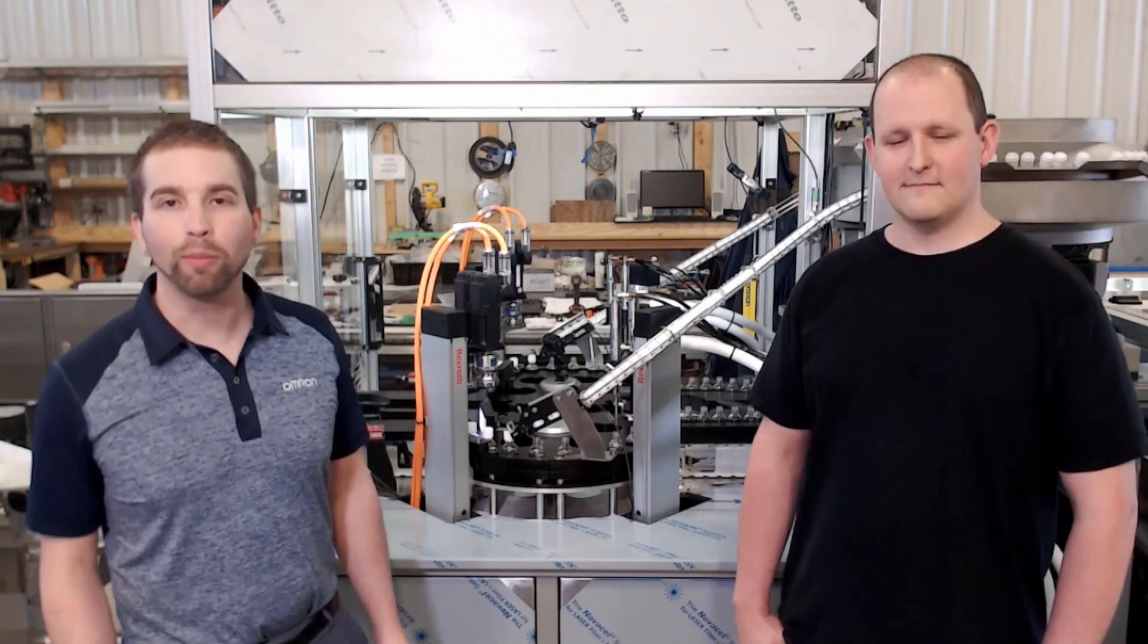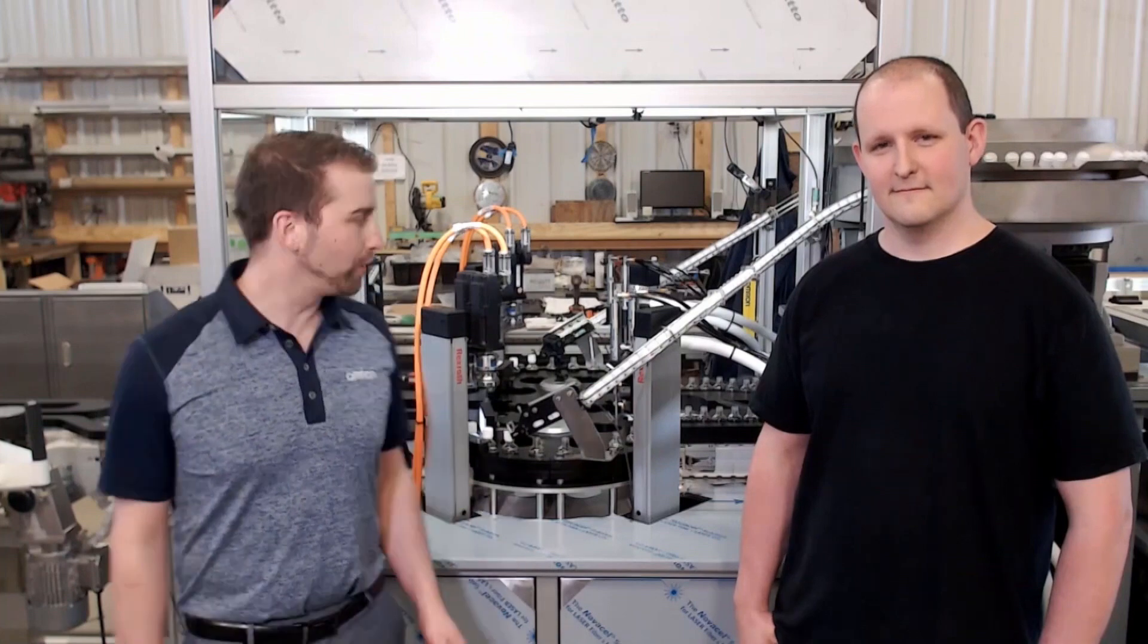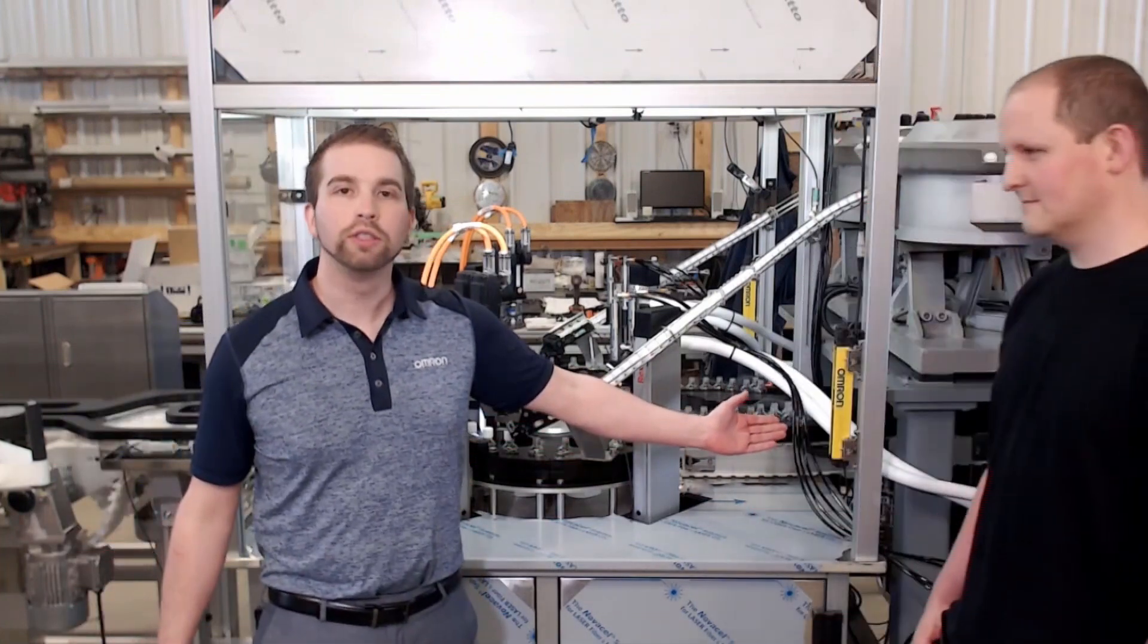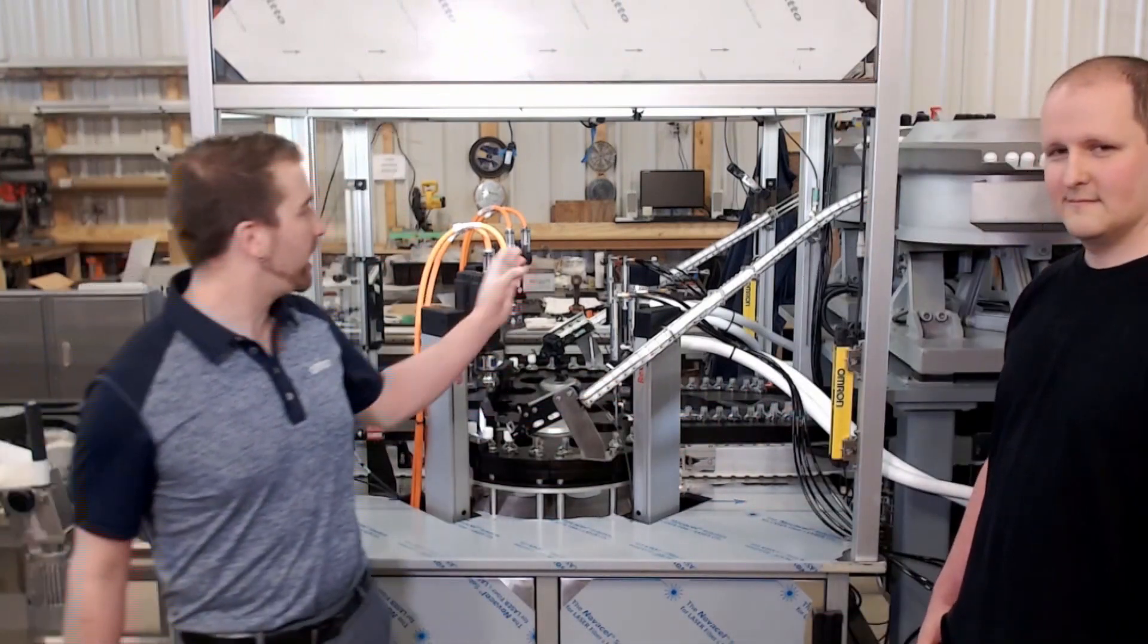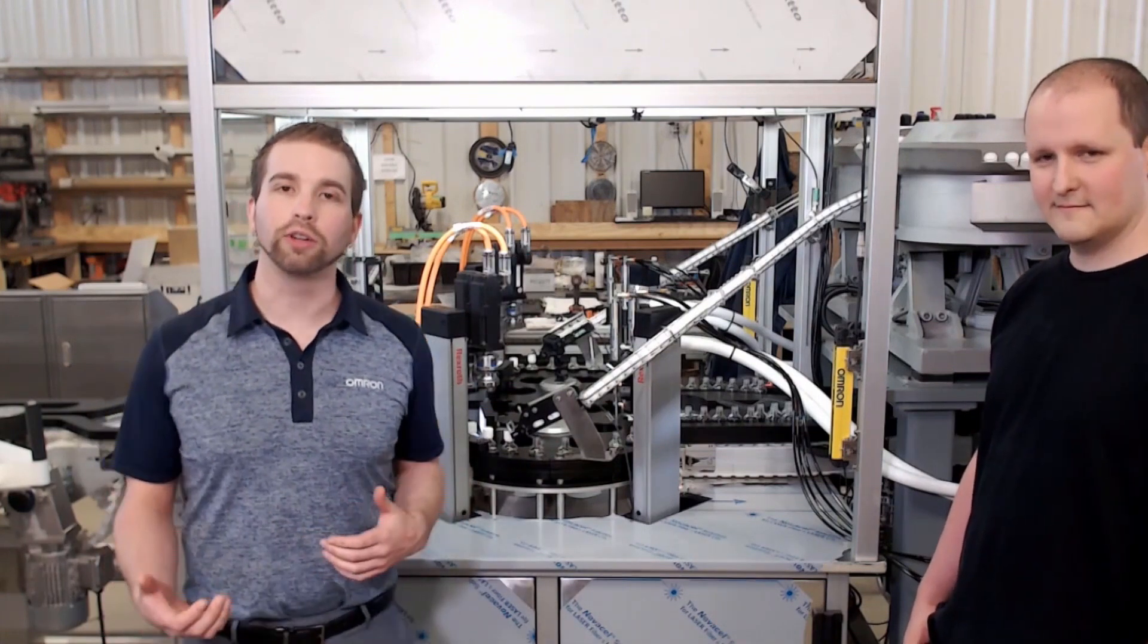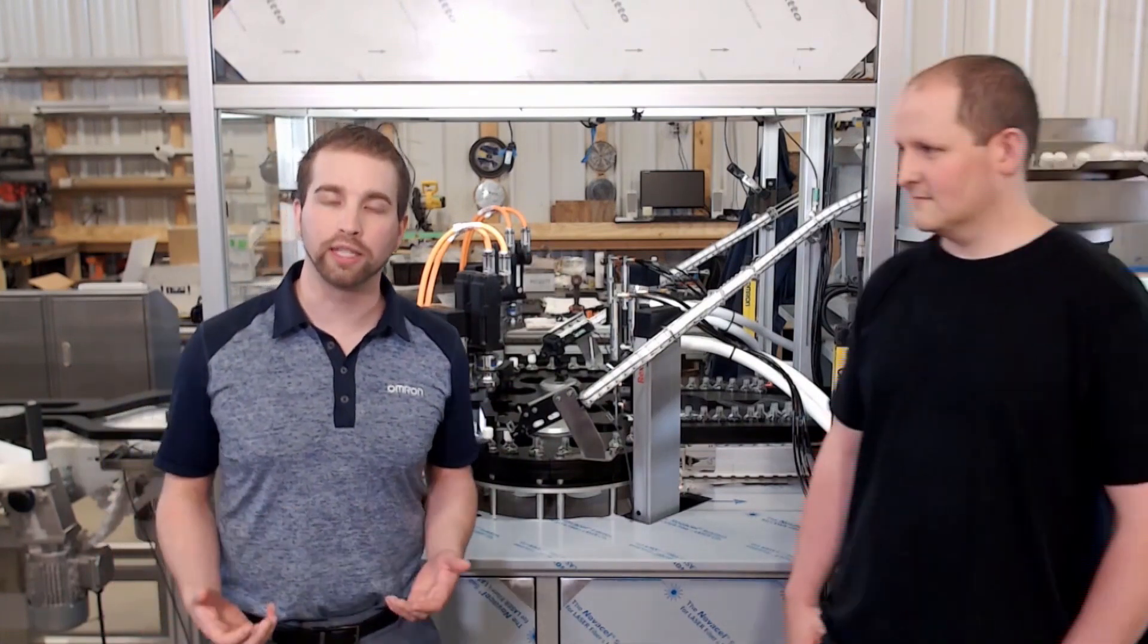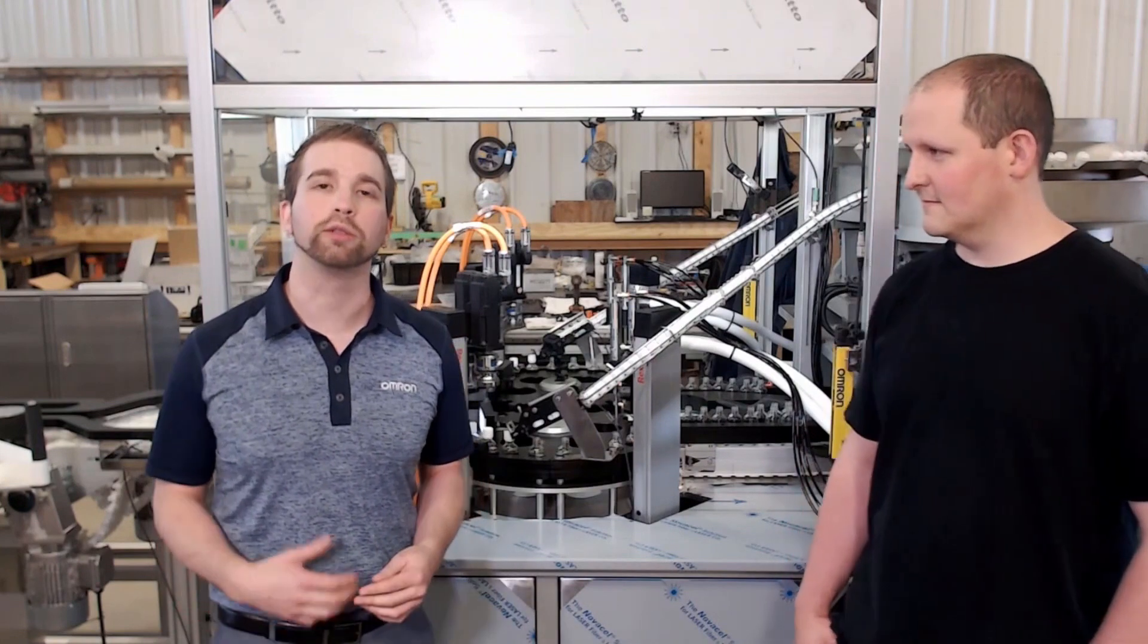They're using four styles of Omron product on this machine. The first is the light curtains. The light curtains are here and there's mirrors on each side that connect at the back. The light curtains are designed to detect when hands are going into the glove port area of the machine and will shut the machine down.